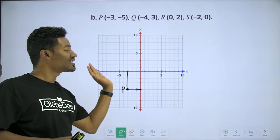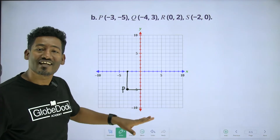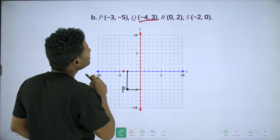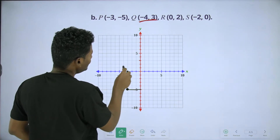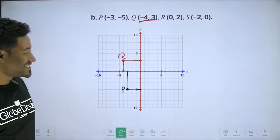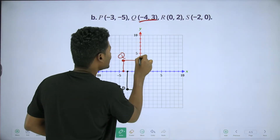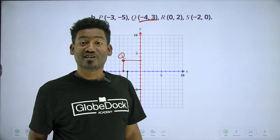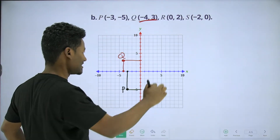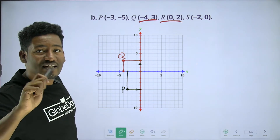X minus 1 is equal to 0. Y is equal to positive. So what does it mean? We can say that the value of Y is equal to negative. Negative is equal to 3. You can't use it to express the value of zero.